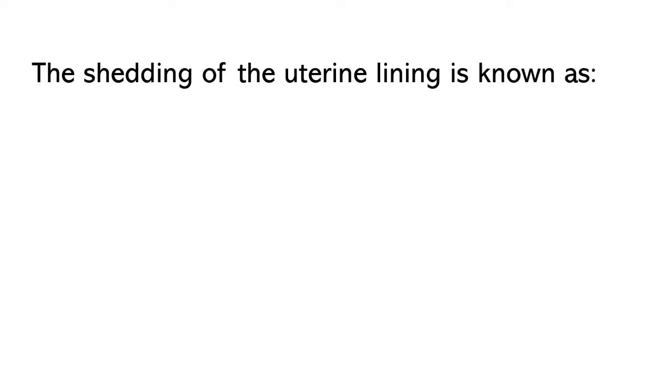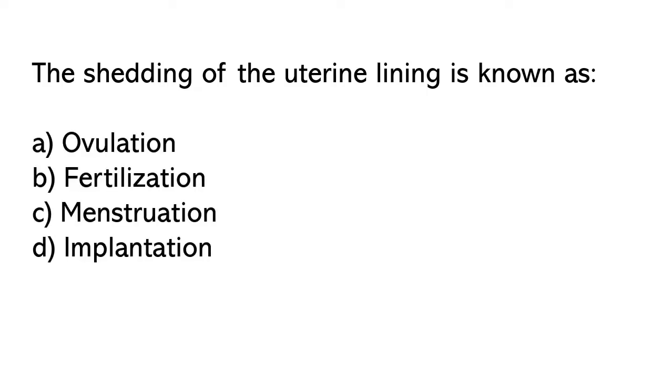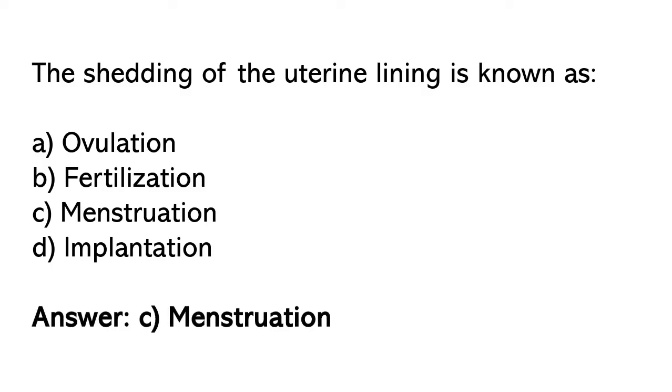The shedding of the uterine lining is known as: A) Ovulation, B) Fertilization, C) Menstruation, D) Implantation. So the correct answer is option C. Menstruation.